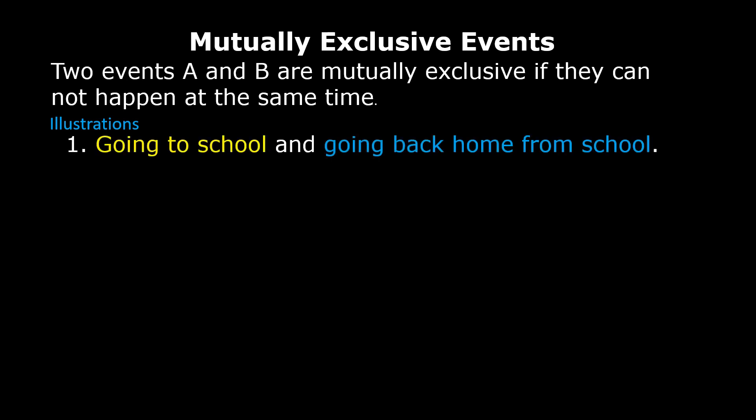Illustration 1: Going to school and going back home from school. The first event is going to school and the second event is going back home from school. These two events cannot happen at the same time. It is impossible for anyone to be going to school and going back home from school at the same time. Therefore, these two events are mutually exclusive events.